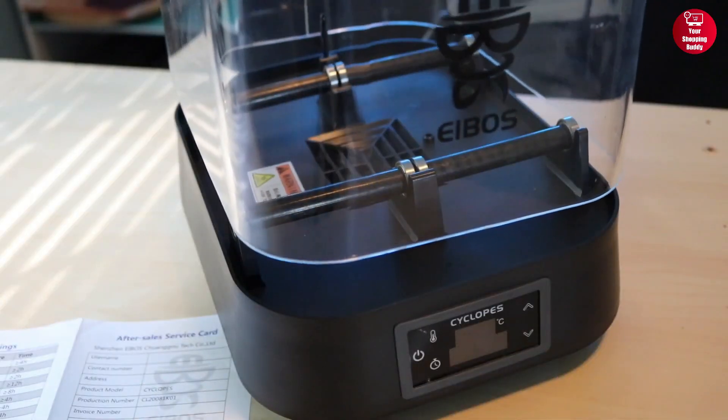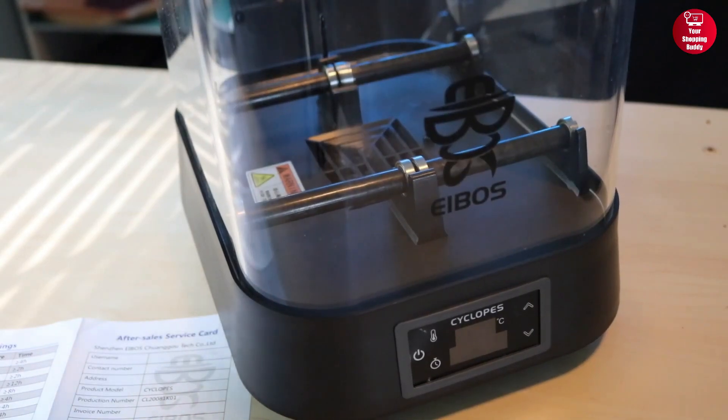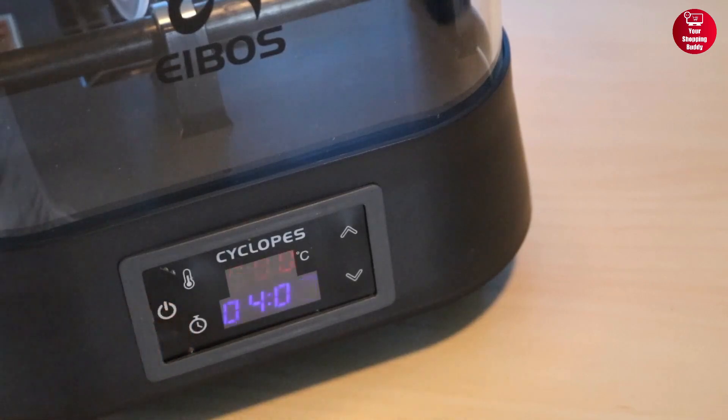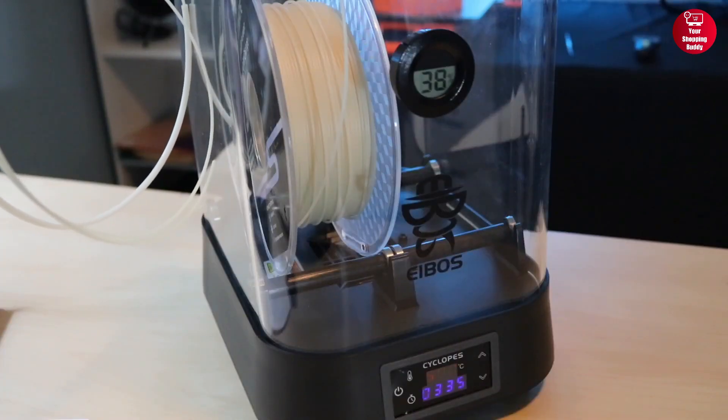So if you're looking for a filament dryer that's not only compatible with a variety of filament types and sizes, but also has an energy saving and efficient heating system, then the iBose Filament Dryer Box is the one for you.